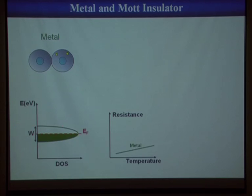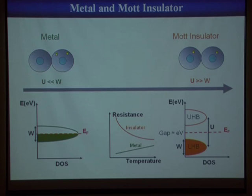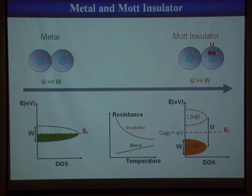On the other hand, if you look at a Mott insulator, the electron motion is frozen due to electronic repulsion that repels electrons from a site when one wants to move from one site to another. When the energy of this electronic repulsion is larger than the bandwidth, it opens a gap at the Fermi level between the lower Hubbard band and the upper Hubbard band. Usually in Mott insulators, gaps are of the order of 1 eV.